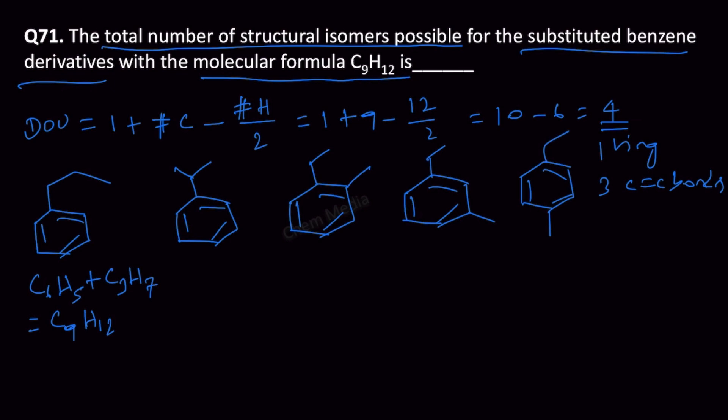We are exhausted with the ethyl methyl combination. Therefore, let us put 3 methyl groups now. So 1, 2, 3, that is 1 isomer.